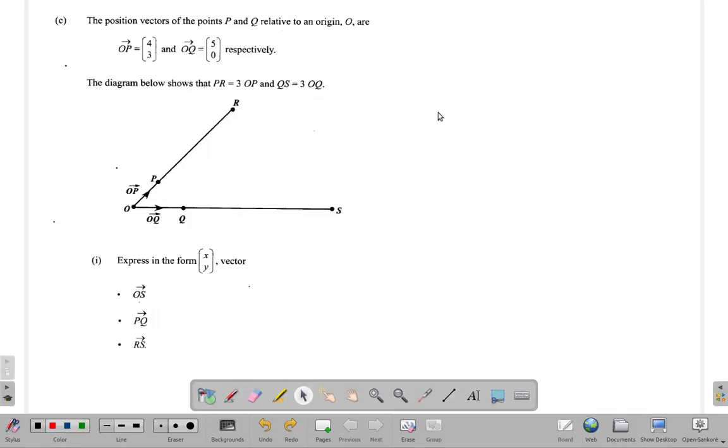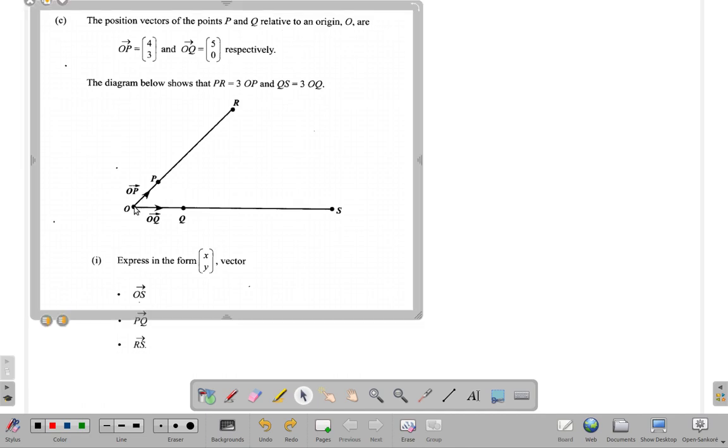Looking at section C1 of question 11. The vectors OP, the position vectors of the points P, or this is P, and Q, this is Q, relative to an origin O, right here.